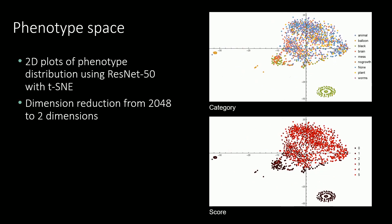For the phenotype space, we used a ResNet-50 image classifier to generate a 2048-element feature vector for each image, then used TSNE to reduce from 2048 dimensions to two. ResNet-50 is a convolutional deep neural network originally trained using the 1.2 million images in the ImageNet database. There are some noticeable structures, but these are mostly failure cases such as completely black images. One category that does stand out is the balloon case, but all other categories seem largely clustered together, with a general tendency towards higher scores in the upper right quadrant — some structure, but not a lot of distinct clustering.